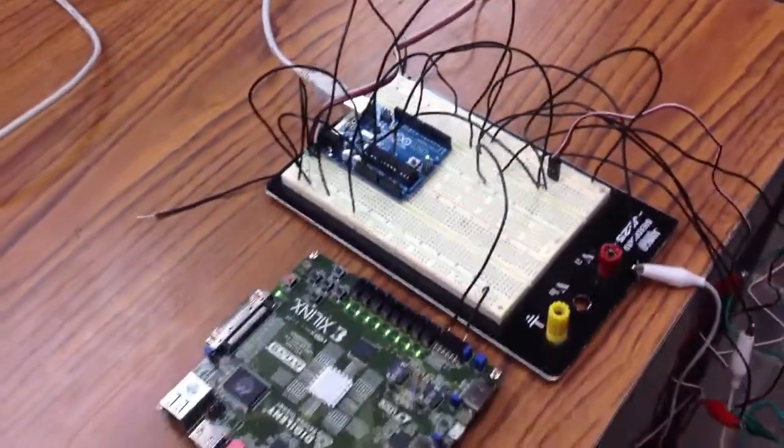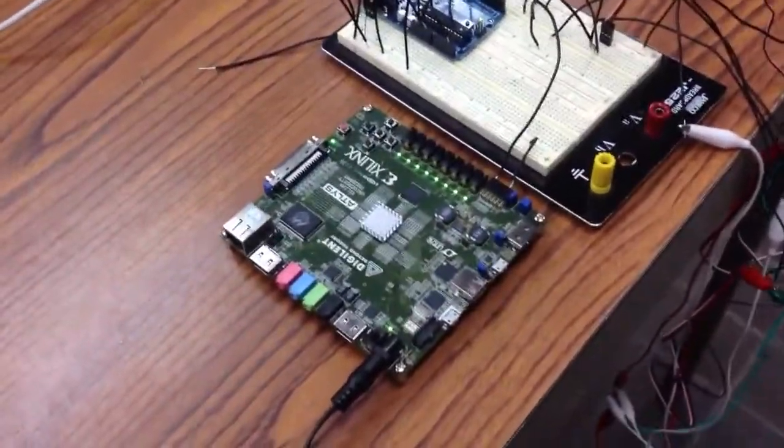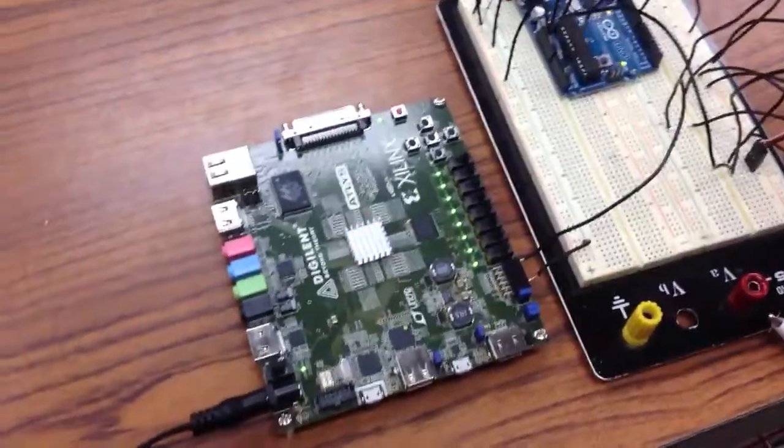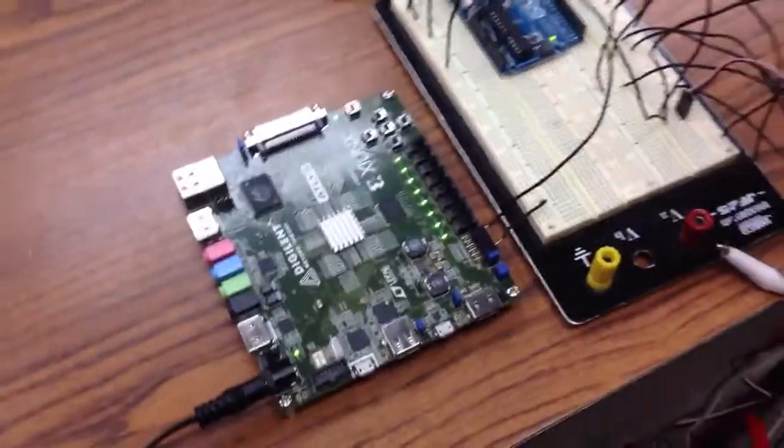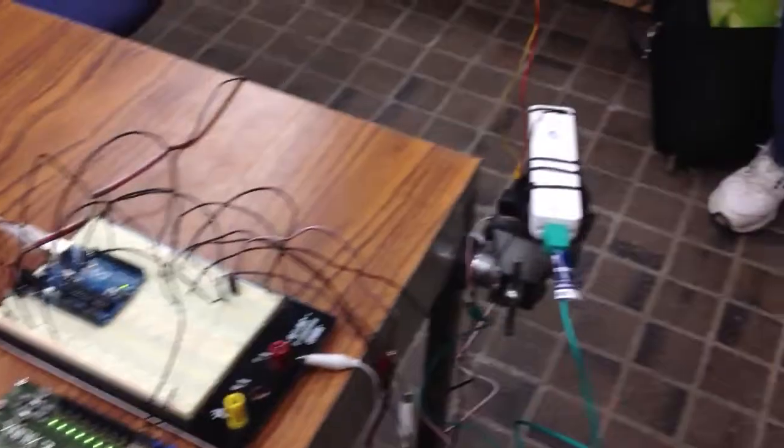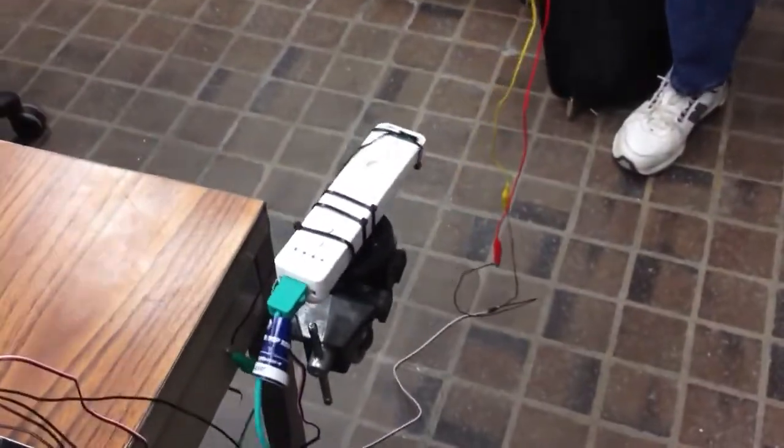And one of the things we have to generate is a 24 megahertz clock signal which is being generated by this digital atlas board. And the whole thing is mounted on top of a parallax standard servo.